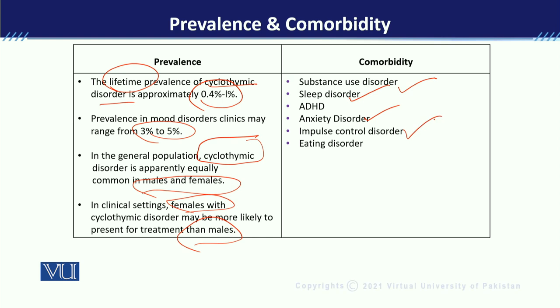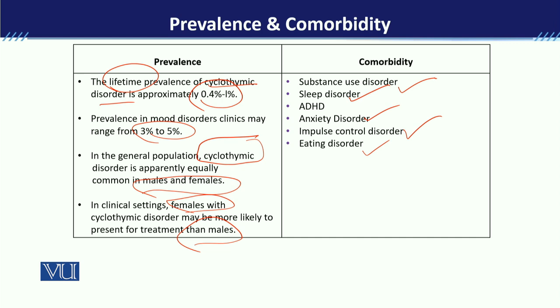Impulse control disorders can also be reported, such as compulsive buying. Eating disorders are also reported. Often, a client may come in presenting another problem, but when you start taking their history, you find that the client is also experiencing Cyclothymia. Sometimes clients do come in directly, but usually in clinical presentation they present with some other problem, and then we discover it is Cyclothymic Disorder.